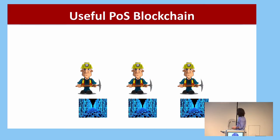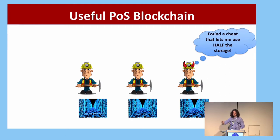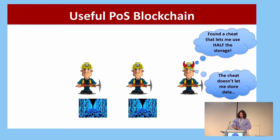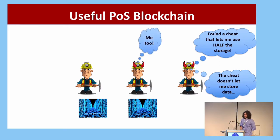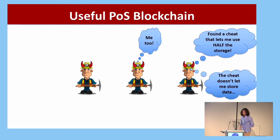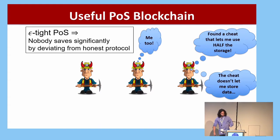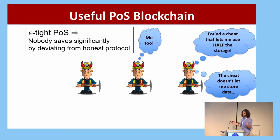Consider a system where miners are mining for the blockchain and using their space for useful data storage. One concern is that at some point a miner finds a cheat giving a huge advantage in the proof of space protocol, but that cheat deviates from the honest protocol and no longer has the same correctness property — it may not allow the prover to store useful data. News travels fast, other miners catch on, and eventually this falls back to just a proof-of-space blockchain with no useful data storage. Tight proofs of space ensure nobody finds an adversarial strategy that saves significantly by deviating from the honest protocol.